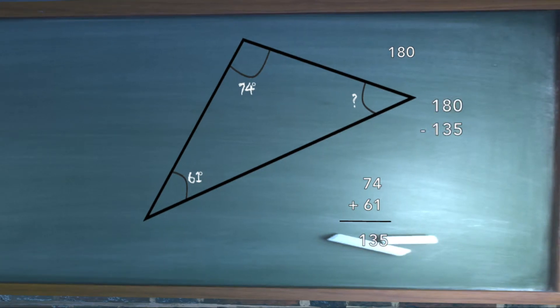A man and a woman had a little baby. Yes, they did. They had three in the family. That's a magic number.